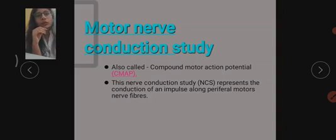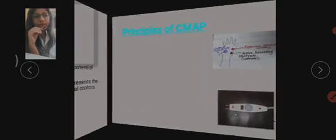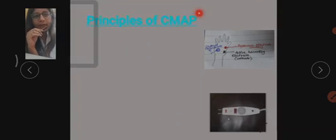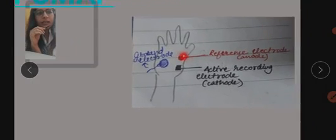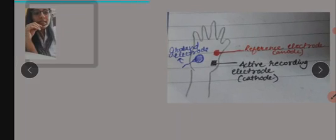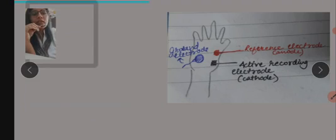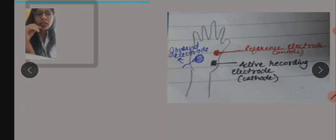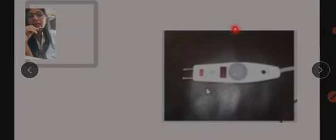Motor nerve conduction studies are used to check the conduction of impulse along peripheral motor nerve fibers. Now coming to the principles of CMAP. The electrodes used in this motor nerve conduction study are: the reference electrode, the active recording electrode, the ground electrode, and the stimulating electrode — so these are basically the four electrodes used in this procedure. The reference electrode is also known as the anode, marked by red color; the active recording electrode is also known as the cathode, marked by black color.